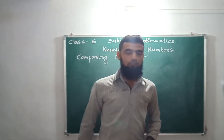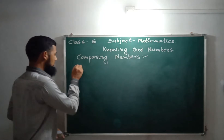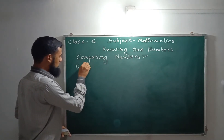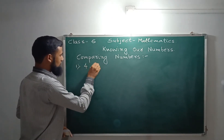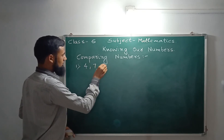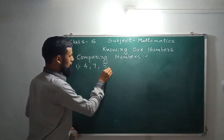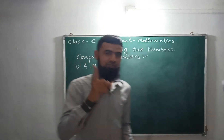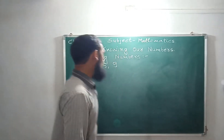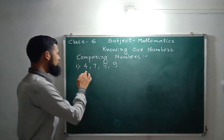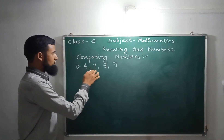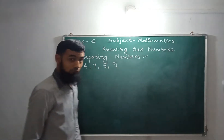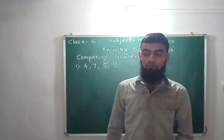For example, I am taking one example: 4, 7, 5, 9. All are one-digit numbers, right? Now tell me, which number is the biggest number?